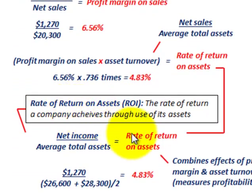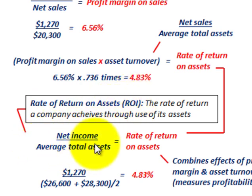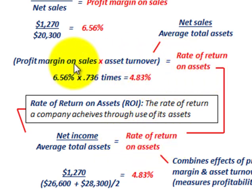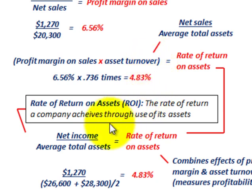Alternatively, you can determine the rate of return on assets just by using net income divided by the average total assets. That gives us our rate of return on assets. So you can determine rate of return on assets either by multiplying profit margin on sales times asset turnover ratio, or by dividing net income by average total assets for the period.